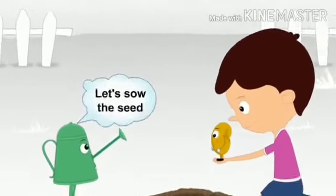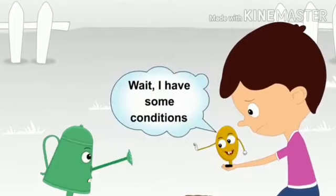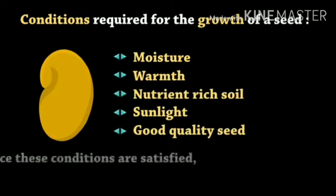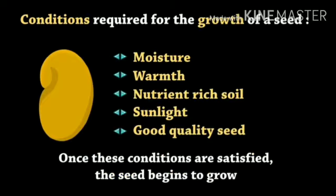Let's sow the seed. Wait, I have some conditions. Conditions required for the growth of a seed are moisture, warmth, nutrient-rich soil, sunlight, good quality seed. Once these conditions are satisfied, the seed begins to grow.